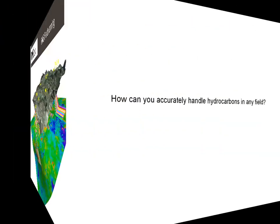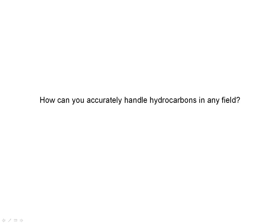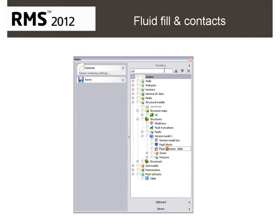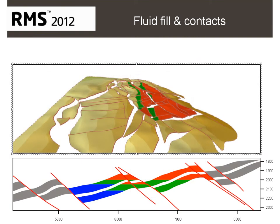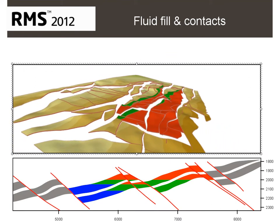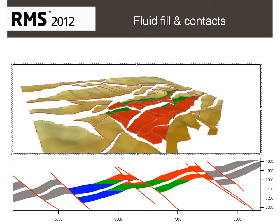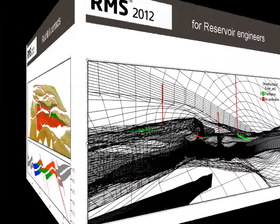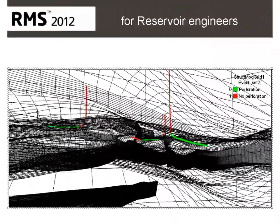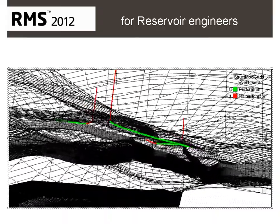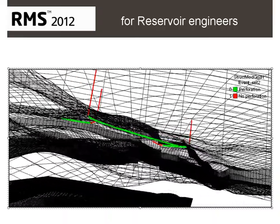How can you accurately handle hydrocarbons in any field? In RMS 2012, you now have the ability to assign and visualize varied contacts in multiple zones and regions on high definition 2D maps, cross sections and 3D horizons. This vastly increases your model accuracy and in turn improves your results. For reservoir engineers, there is now the ability to export flow model event data for various simulation formats, making the setup of your simulation data even easier.